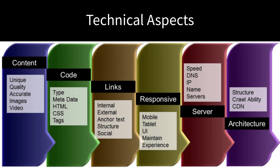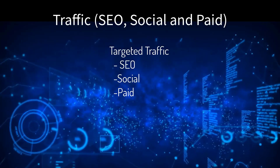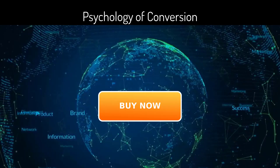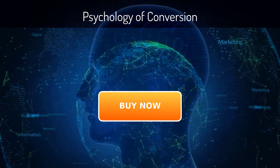Of course, all online marketing must have three elements in alignment: the technical aspects — servers, layout, code structure — the traffic — SEO, social, and paid — and the psychology of conversions.